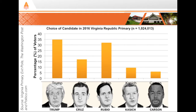This graph shows the results. As you can see, about 35% of the population cast votes for Donald Trump, about 32% for Marco Rubio, and so on.